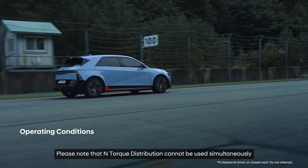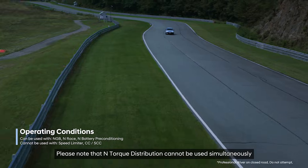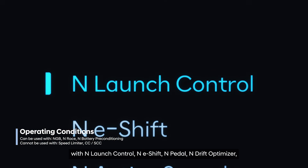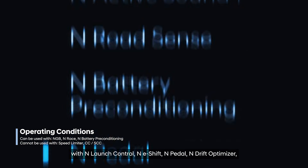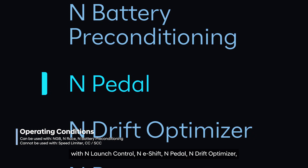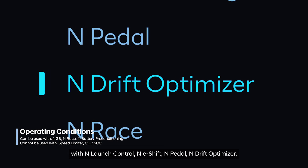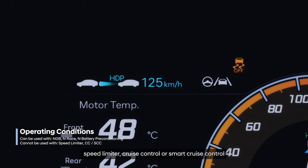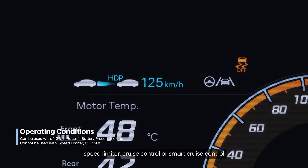Please note that N-Torque distribution cannot be used simultaneously with N-Launch Control, N-E-Shift, N-Petal, N-Drift Optimizer, Speed Limiter, Cruise Control or Smart Cruise Control.